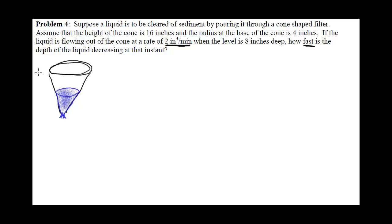Now I want to label the picture. I reread the problem. I see 16, which represents the height of the cone. I also see 4, which represents the base of the cone. I'm labeling these values with constants because they're constant throughout the problem. As the liquid flows out, the cone-shaped filter is not changing, so it's okay to label them 4 and 16.